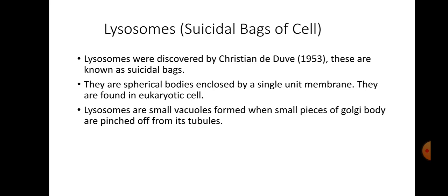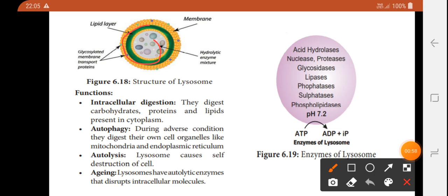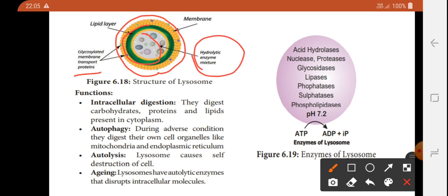Now we will talk about the structure of Lysosomes. They are surrounded by a lipid layer — a membrane called a Glycosylated Membrane. The most important thing inside is the use of enzymes. They contain a hydrolytic enzyme mixture — all types of enzymes that work in the cells.